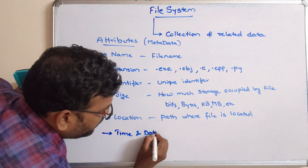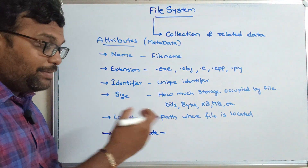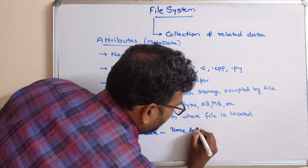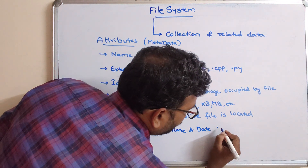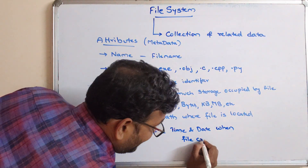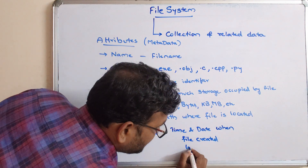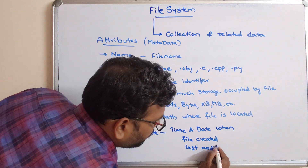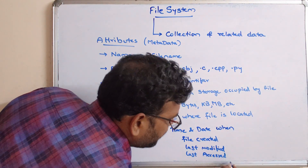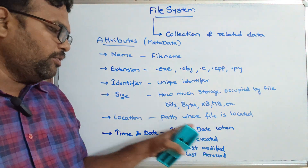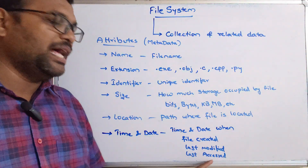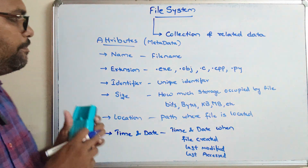Similarly, every file will have a time and date — when the file was created, when it was last modified, and when it was last accessed. All these details will be there for every file. The time and date attribute records when the file was created, last modified, and last accessed — every detail will be stored.